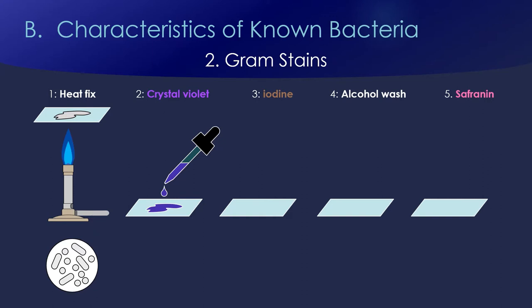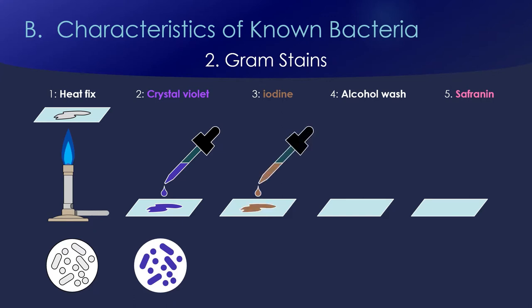The very first stain we add is crystal violet — which is purple. It sticks to a lot of things: both Gram positive and Gram negative cells, and even a little on the glass slide. So at this point everything's purple. Next we add iodine. Iodine has a negative charge and crystal violet has a positive charge, so they form complexes that get trapped inside the thick peptidoglycan layer of Gram positives. At this point everything still looks purple — we haven't washed away the crystal violet yet, so Gram negatives still look purple as well.